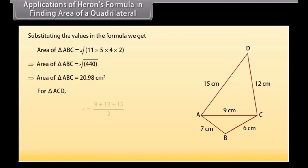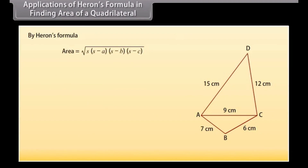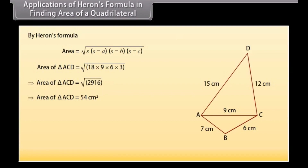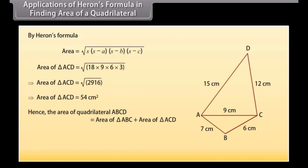For triangle ACD: S = (9 + 12 + 15) / 2 = 18 cm. By Heron's formula, area of triangle ACD = √(18 × 9 × 6 × 3) = 54 cm². Hence, the area of quadrilateral ABCD = area of triangle ABC + area of triangle ACD = 20.98 + 54 = 74.98 cm².